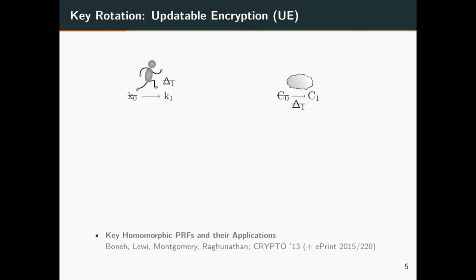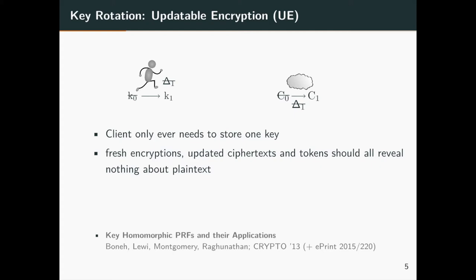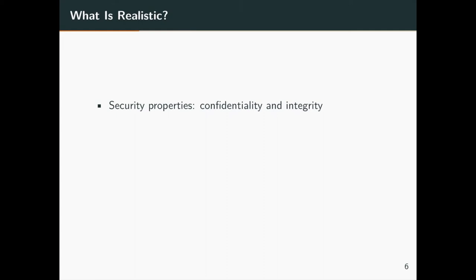The cloud user deletes the old key and the token when she sends out the update token. The cloud server deletes all old ciphertexts and the update token after finishing all updates. It is reasonable to expect that fresh encryptions, updated ciphertexts, and tokens shouldn't reveal anything about the plaintext to an adversary. The use case of updatable encryption appears promising, and we also want security — naturally, confidentiality and integrity. Before defining a security notion, it is crucial to consider what an attacker can possibly do.